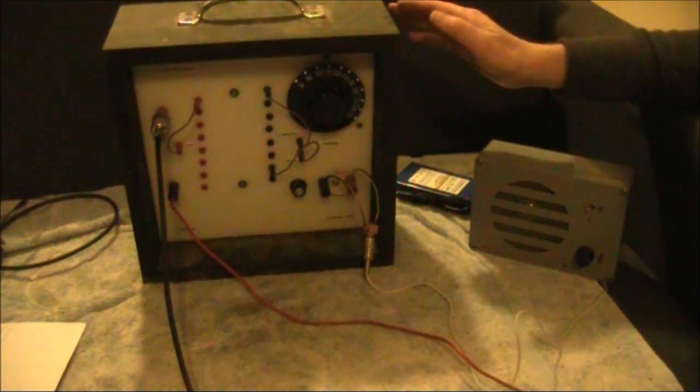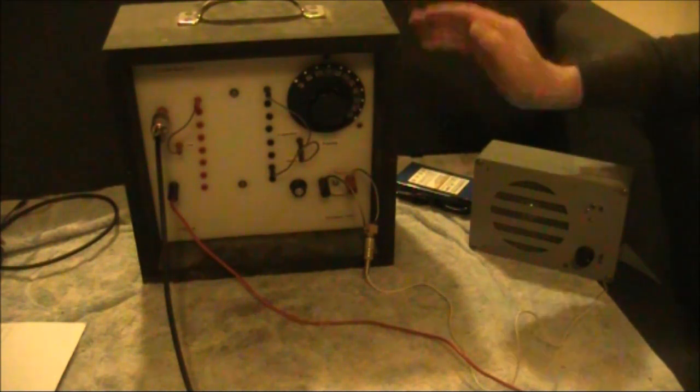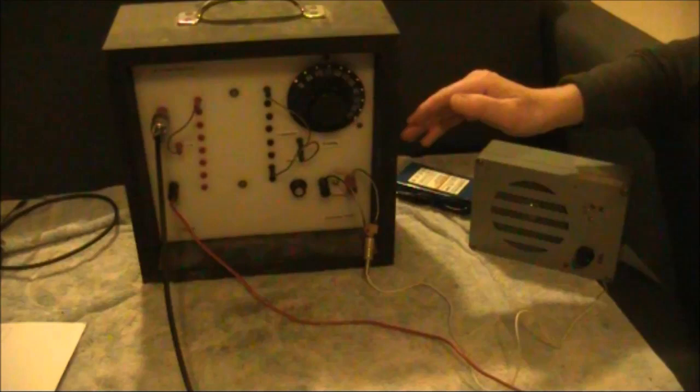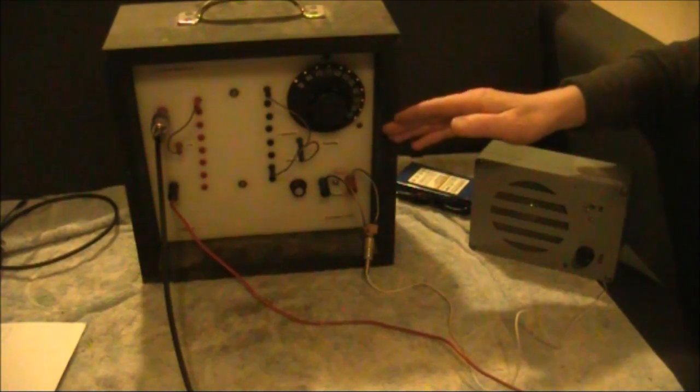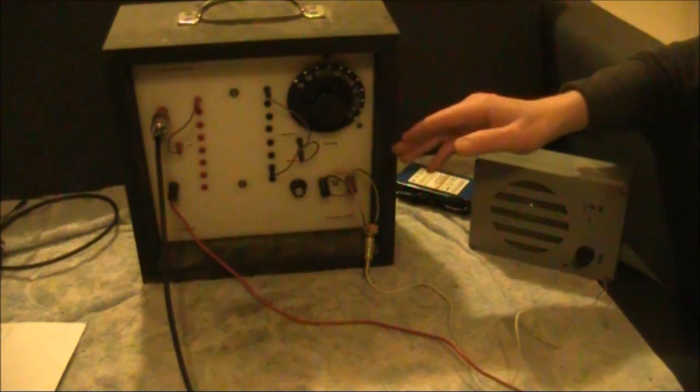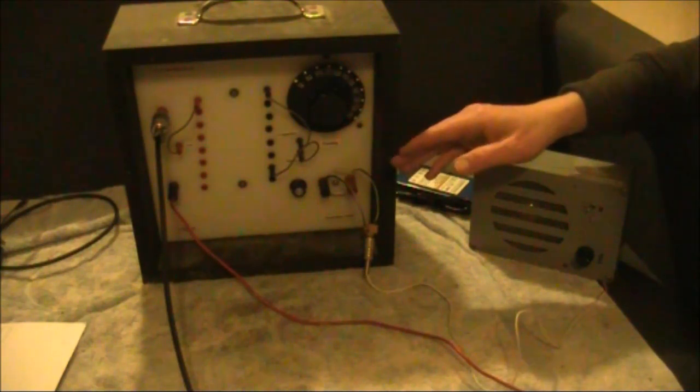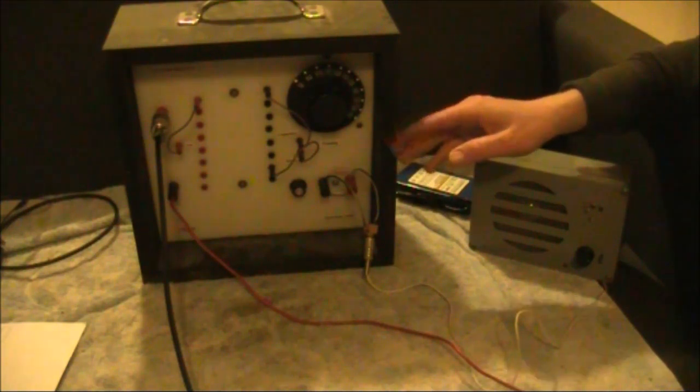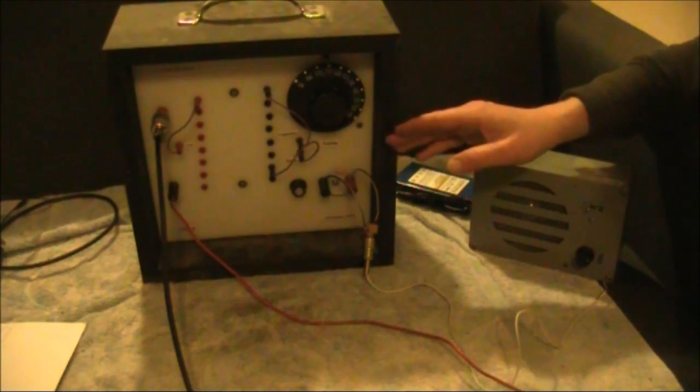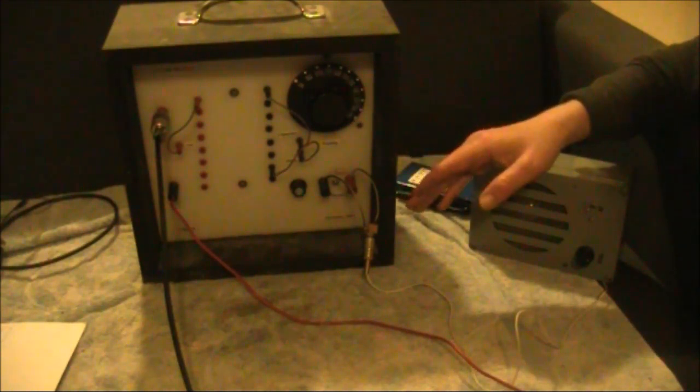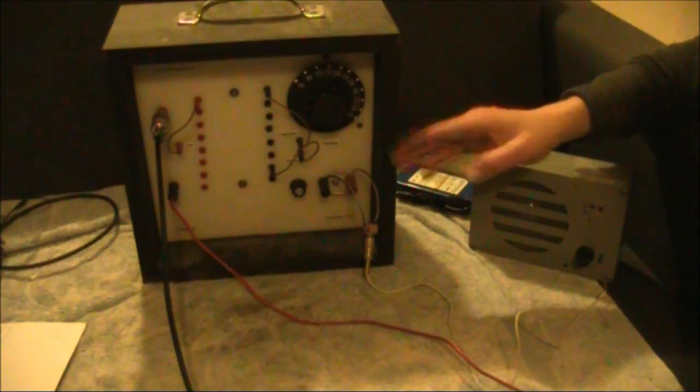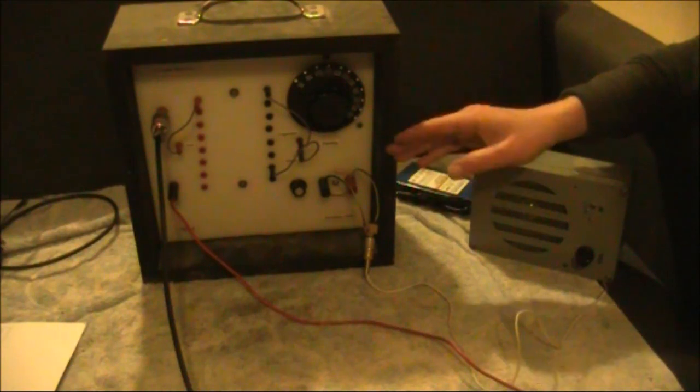So that's our demonstration of the Q-multiplier. Maybe it doesn't appeal to the crystal set purist, because it does draw power, although you could argue that there aren't actually any active components in the signal path, assuming you're using headphones. It certainly tightens the selectivity of the receiver and allows reception of much weaker stations, including interstate, that would otherwise not be possible without the Q-multiplier.